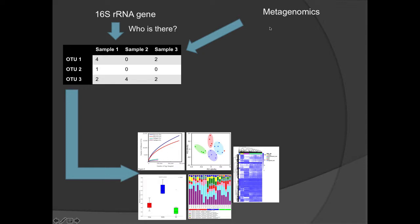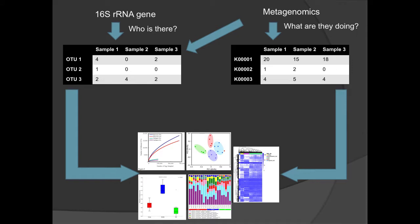Similarly, with metagenomics, you can use different methods to find out who is there, using different approaches to find out what taxa are in that sample — that will be covered more tomorrow morning. And with metagenomics, you find out not just who is there but what they're doing. You can annotate genes with particular functional classes and eventually get to a table of, say, KEGG orthologs or EC numbers, and use that information to collapse them into pathways. From there you compare differences of functional classes and talk about the functional repertoire within that community.